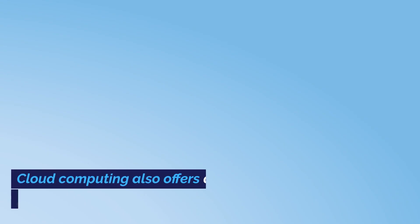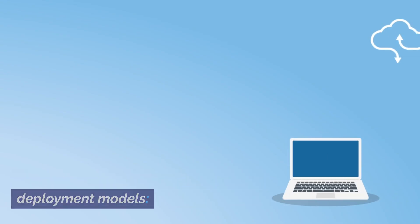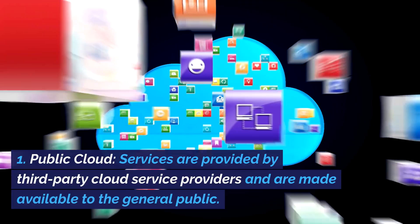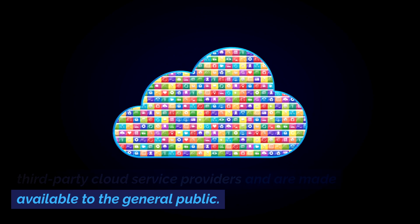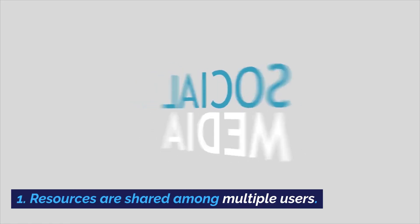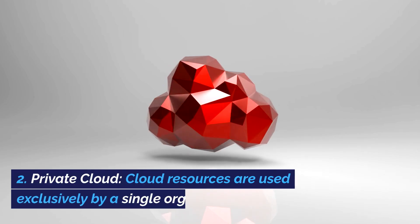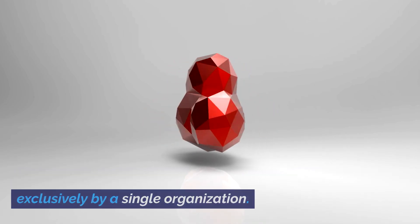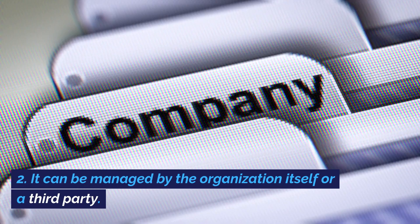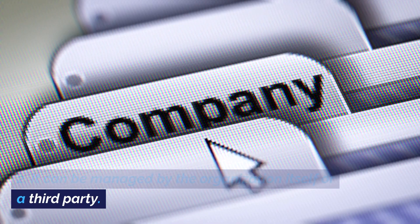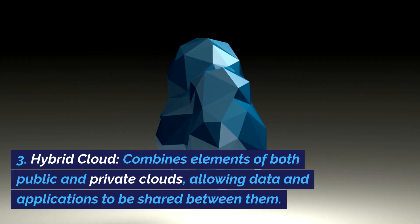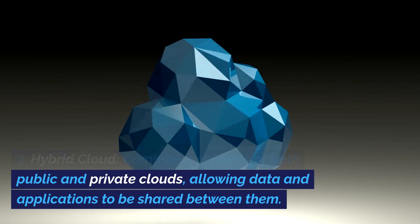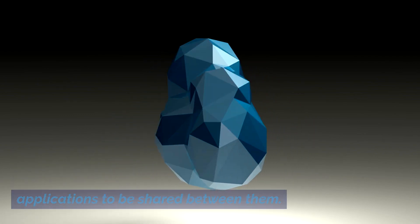Cloud computing also offers different deployment models. 1. Public Cloud: services are provided by third-party cloud service providers and are made available to the general public, with resources shared among multiple users. 2. Private Cloud: cloud resources are used exclusively by a single organization, and can be managed by the organization itself or a third party. 3. Hybrid Cloud: combines elements of both public and private clouds, allowing data and applications to be shared between them.